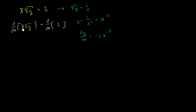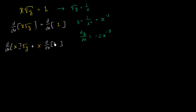The product rule tells us we have the product of two functions of x. So the product rule tells us this is going to be the derivative with respect to x of x, times the square root of y, plus x times the derivative with respect to x of the square root of y. And on the right-hand side, the derivative with respect to x of this constant is just going to be equal to 0.